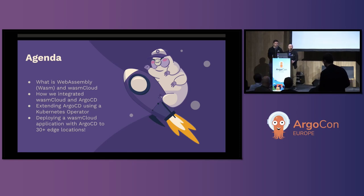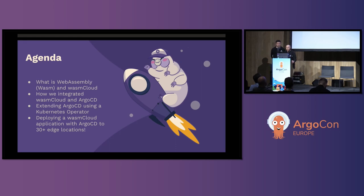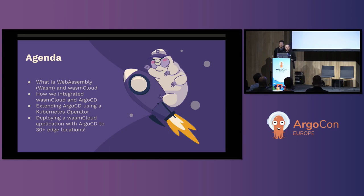A quick overview of what we're going to cover for this session: my colleague is going to give you a brief overview of what Web Assembly is, a brief intro to the CNCF project Wasm Cloud that we both work with. Then I'm going to go through how we integrated both Wasm Cloud and Argo CD, how we extended some of those capabilities using a custom Kubernetes operator, and then a live demo of how Argo drives a deployment of a Wasm Cloud application to over 30 plus edge locations.